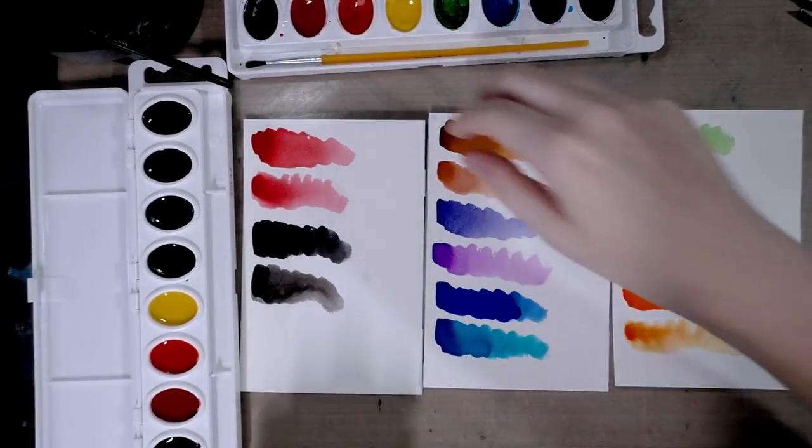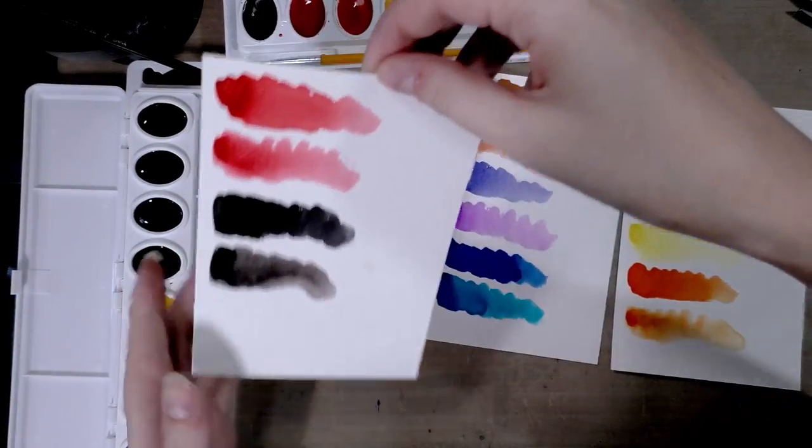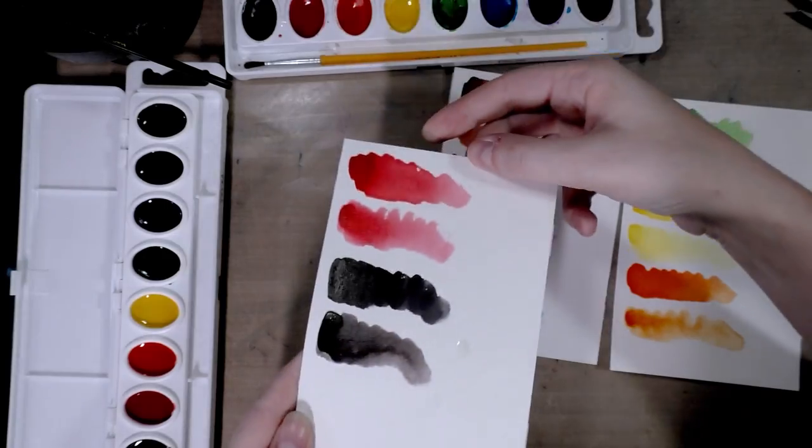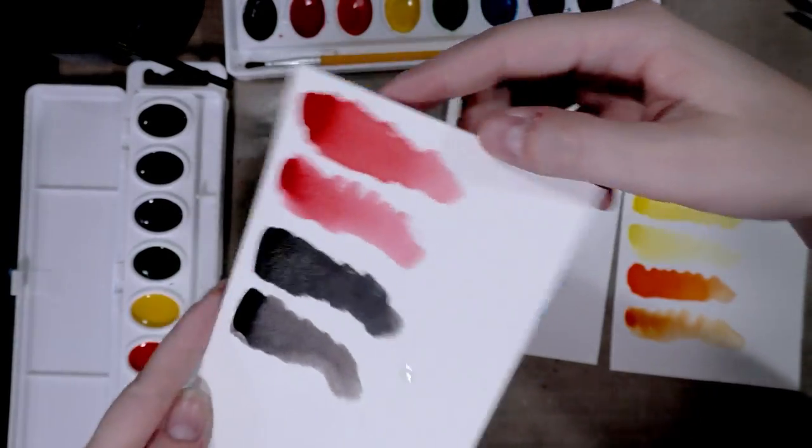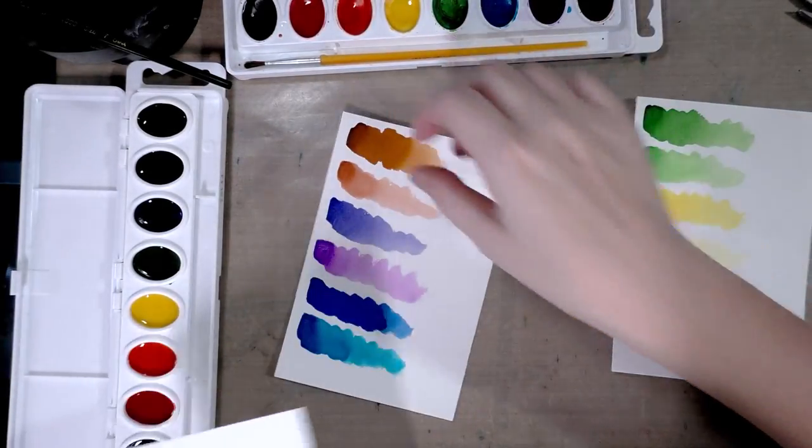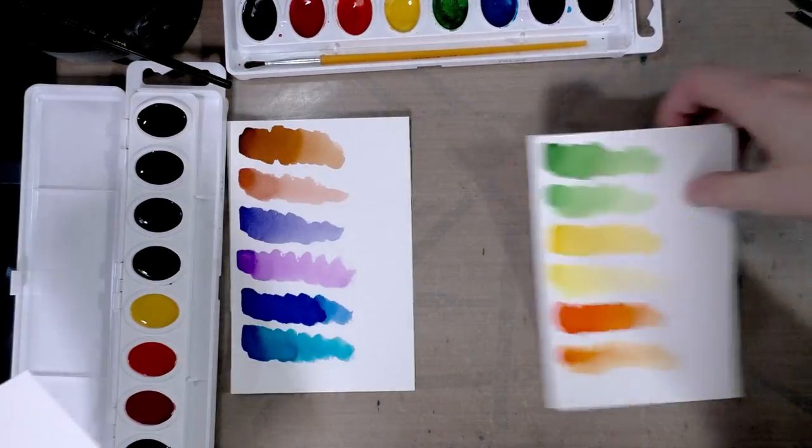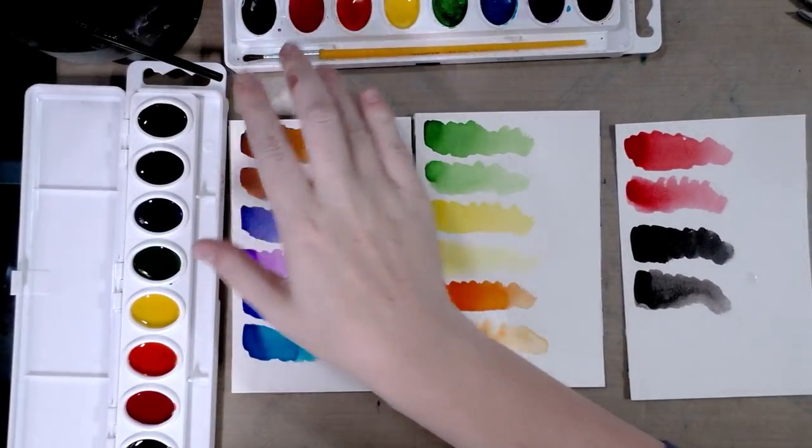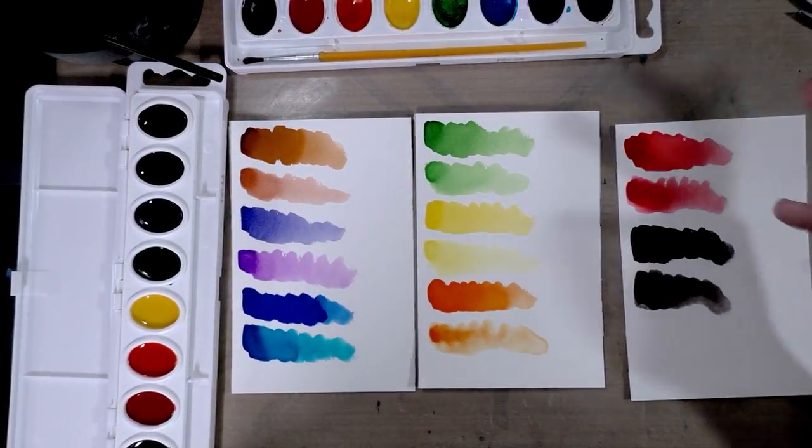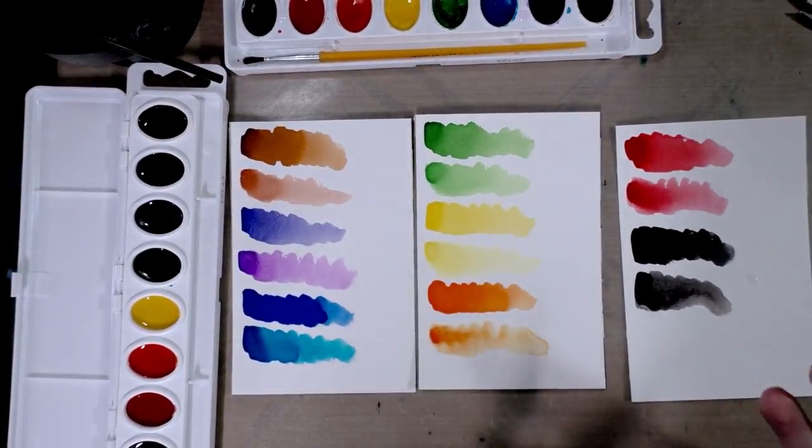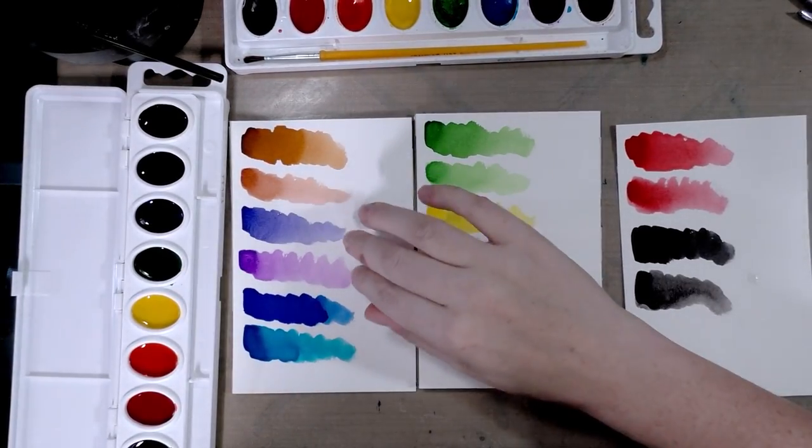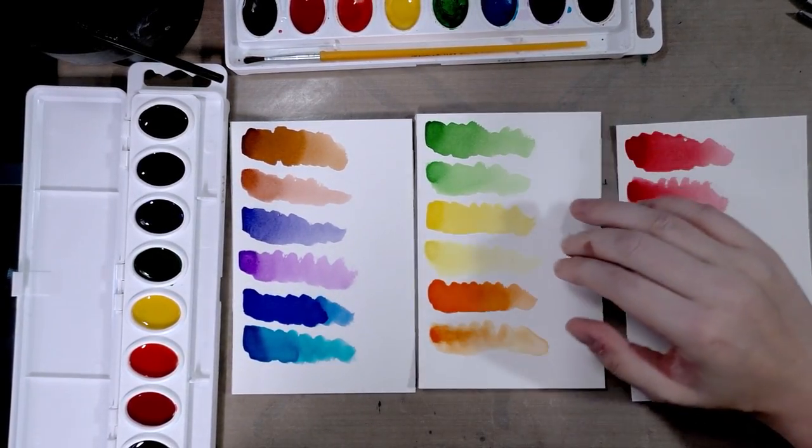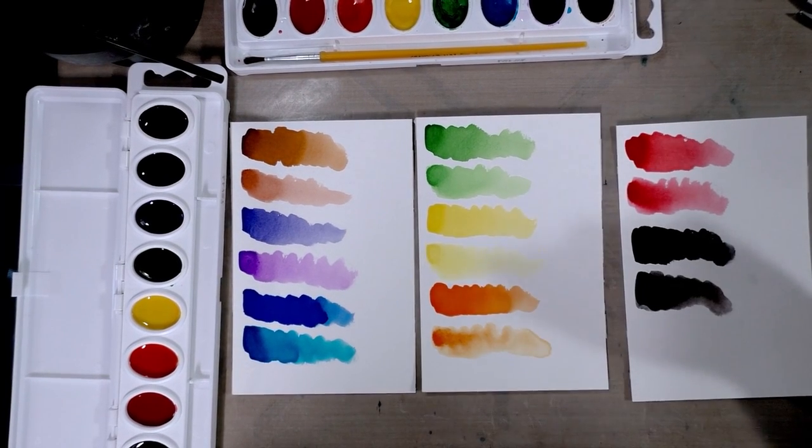I'm going to lay these out side by side and then check in with you after they've had a chance to dry. This is education and washable Crayola watercolors when wet. Colors are very vivid for both, although with the education they're much more vivid. There are some significant color differences between the education and the washable, which I think is really interesting.